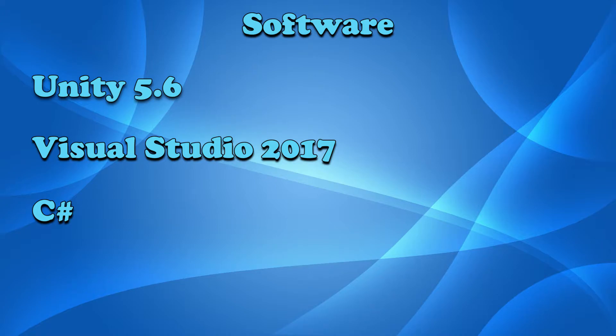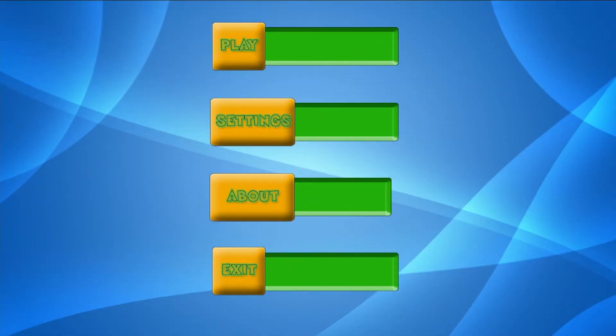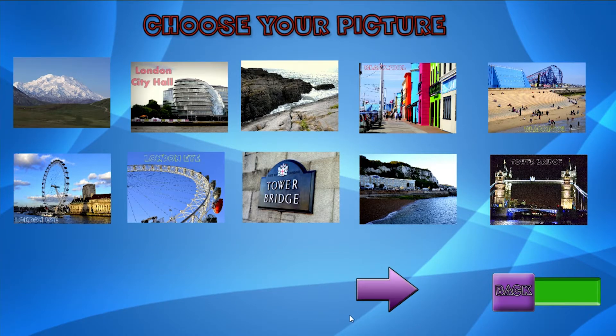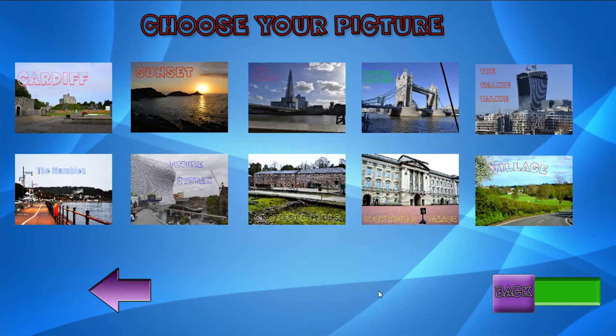Let's see what we're actually going to create. Here is our main menu and we have a few different buttons, each of them with a sliding effect. Let's press on the Play button and choose a picture.